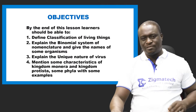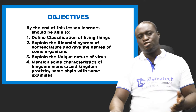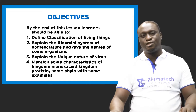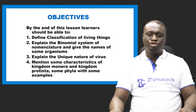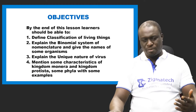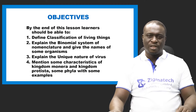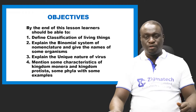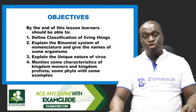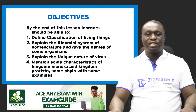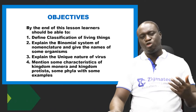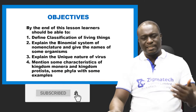Now let's take a look at some of the objectives — things you should know at the end of this class. Number one: you should be able to define classifications of living things. Number two: explain the binomial system of nomenclature and give names of some organisms. Number three: explain the unique nature of a virus. Number four: mention some characteristics of Kingdom Monera and Kingdom Protista, including their phyla with examples.